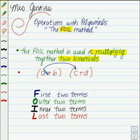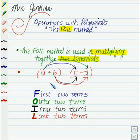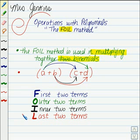Then you'll multiply A times D — that's distributing and multiplying together your outer two terms. Then we'll distribute the B: B times C, and that's our inner two terms, the I in FOIL. The last thing we have to distribute is B times D, and that's when you multiply together your last two terms. So the FOIL method is simply an acronym that helps you remember to distribute four times when you're multiplying together two binomials.